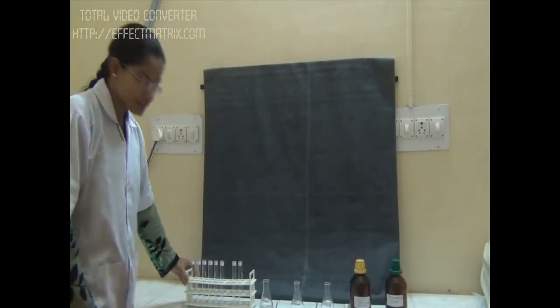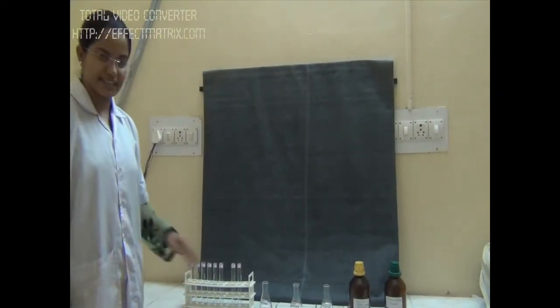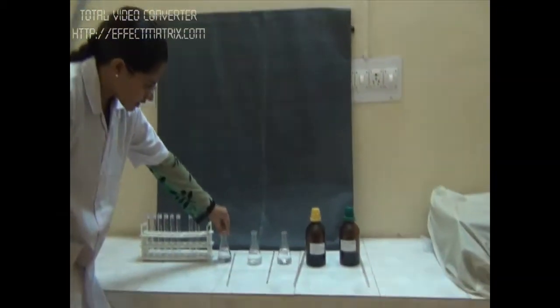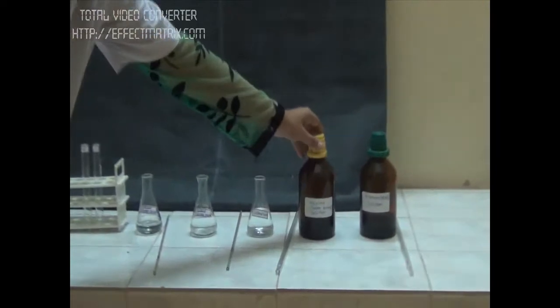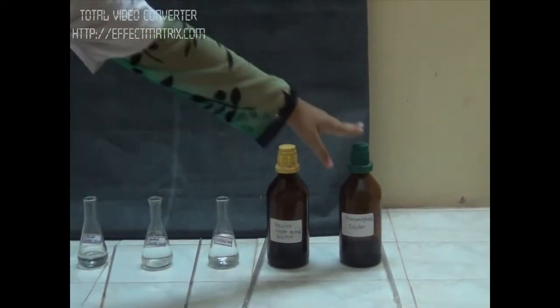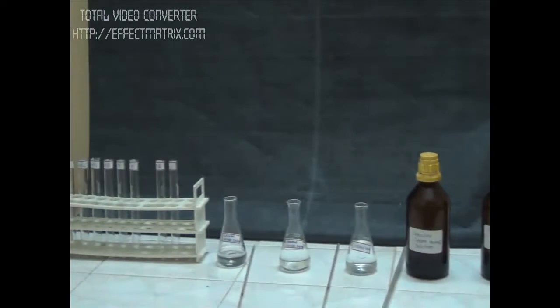So today we are going to estimate the amount of reducing sugar by Nelson's Somogyi method. We are having our unknown glucose solution, standard glucose solution, distilled water, alkaline copper tartrate solution, and arsenomolybdate solution. These are our reagents.